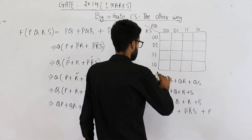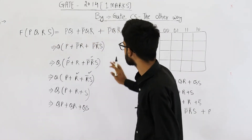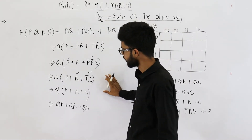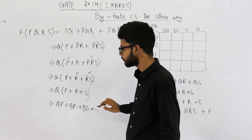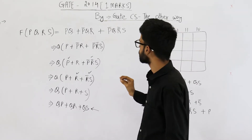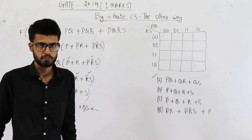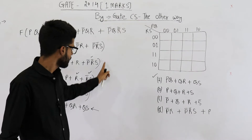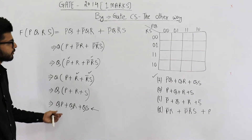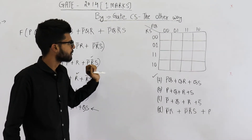You can see option A matches QP + QR + QS, so the answer to this question is option A. Now in my theory lectures I've told you multiple times: don't rely solely on this method, because we cannot be sure this is the minimal answer — it may or may not be the minimal one. The best method is K-map. Using K-map, it is guaranteed that whatever answer you get is the minimal one, if you haven't made any mistake. In questions where you have options, you can use this method, but prefer K-map.